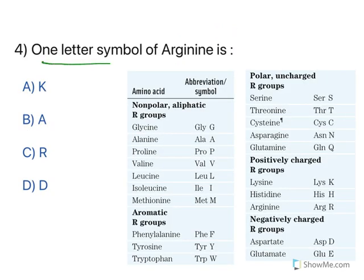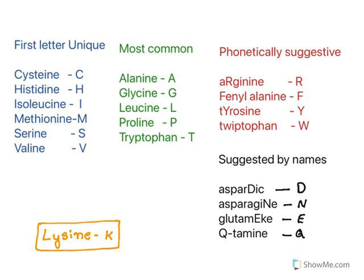Moving to the next one: what is the one-letter symbol of arginine? All amino acids are provided with a 3-letter code and a single-letter code. When biotechnology improved, there was a requirement for recognizing amino acids with a single-letter code. The single-letter codes are given with particular logic. First pattern — first-letter unique: certain amino acids have a unique starting letter. Like cysteine — C has no other amino acid, so C is given to cysteine. Similarly histidine gets H, isoleucine gets I, methionine gets M, serine gets S, valine gets V — all unique starting letters.